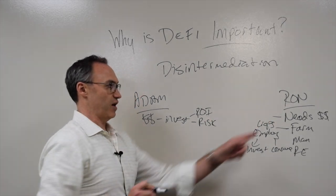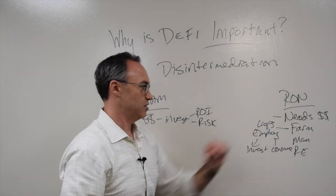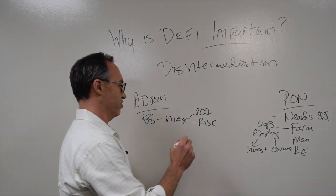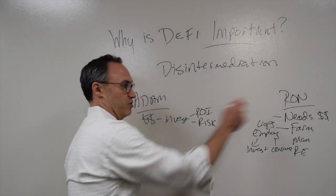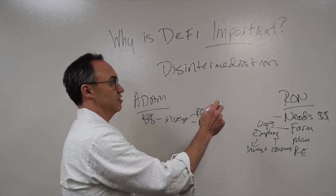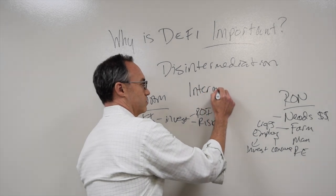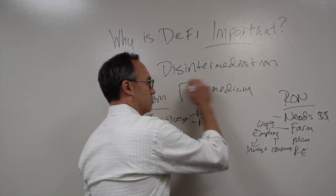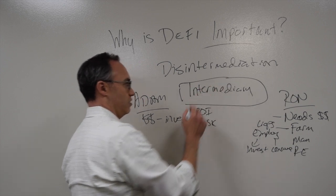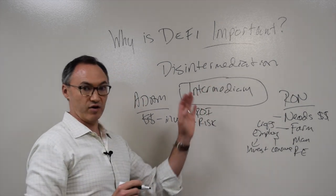If Ron does not have access to this capital, then he can't go forward with his farm and he can't hire these people. If Adam does not know about Ron, then he can't lend him the money. Currently, the thing that's potentially stopping this from happening is an intermediary.